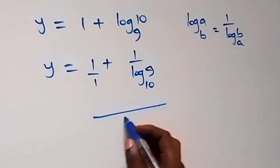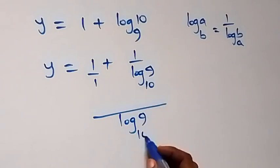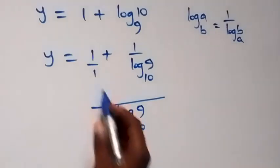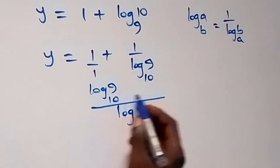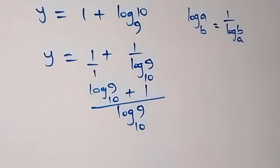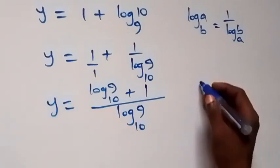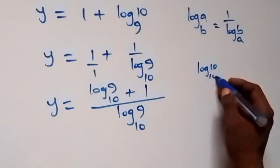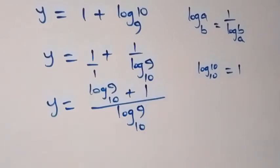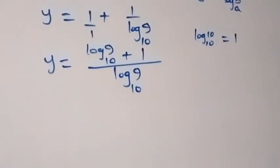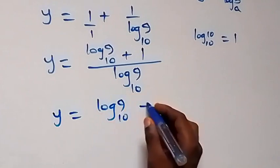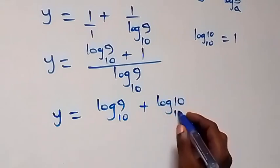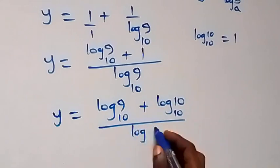We can bring it together as 1, that is log 9 to base 10. We recall that log 10 to base 10 is equal to 1, so we place it as log 10 to base 10. Then what we have now becomes y equals log 9 to base 10, plus log 10 to base 10, all over log 9 to base 10.